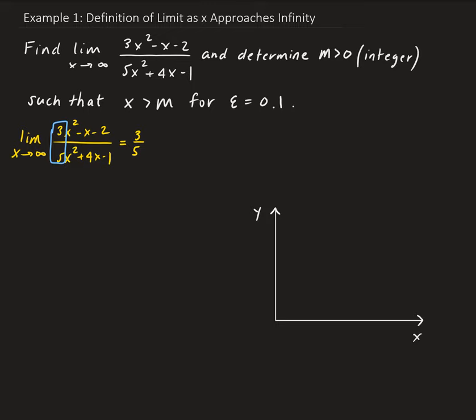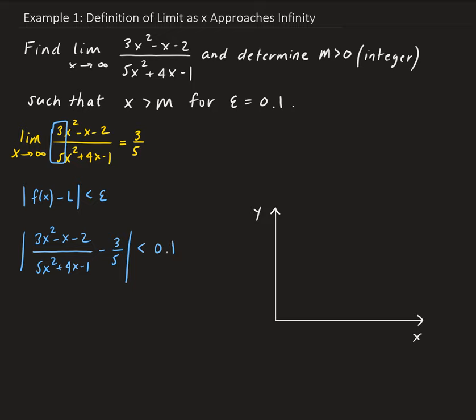Now we apply the definition. We're going to have |f(x) - L| less than epsilon. So our function gives us: 3x squared minus x minus 2, all divided by 5x squared plus 4x minus 1, minus L — and L in this case is 3/5. This is going to be less than the epsilon value, which is 0.1.